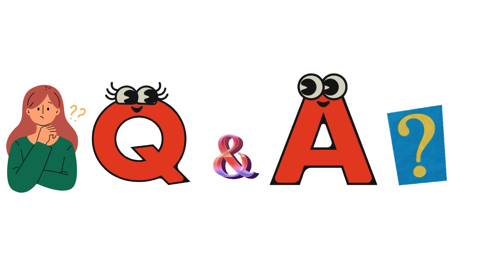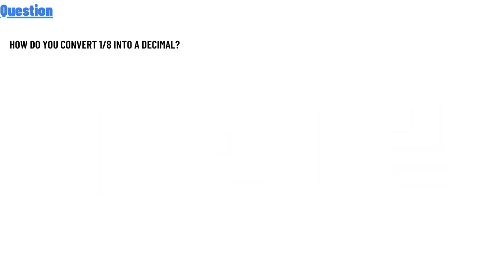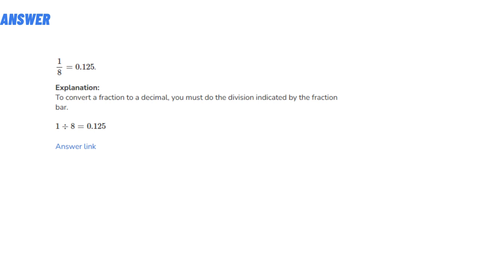So let's get to the question. Our question today is: how do you convert one divided by eight into a decimal? The correct answer is one divided by eight is equal to 0.125.